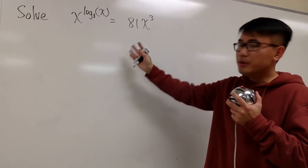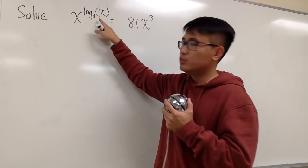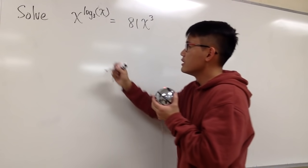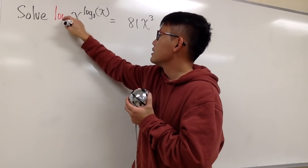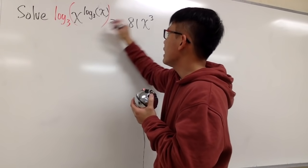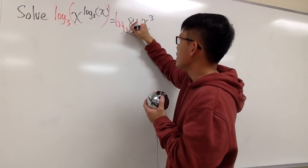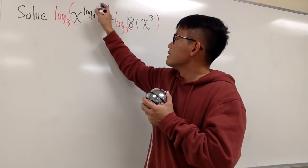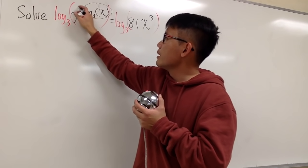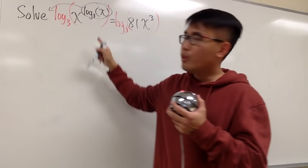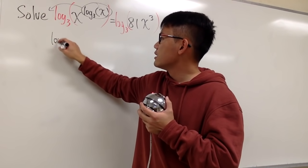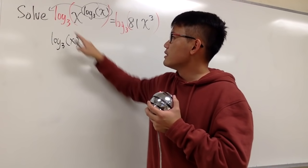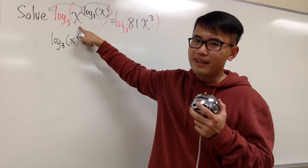Let me do that, and because here we have log base 3 already, let's match that base. So first, let me take log base 3 on the left-hand side, of course, we will have to do the same thing on the right-hand side. We see that for this, this is just a power, we can bring that to the front, and we will have log base 3 of x, times another log base 3 of x.